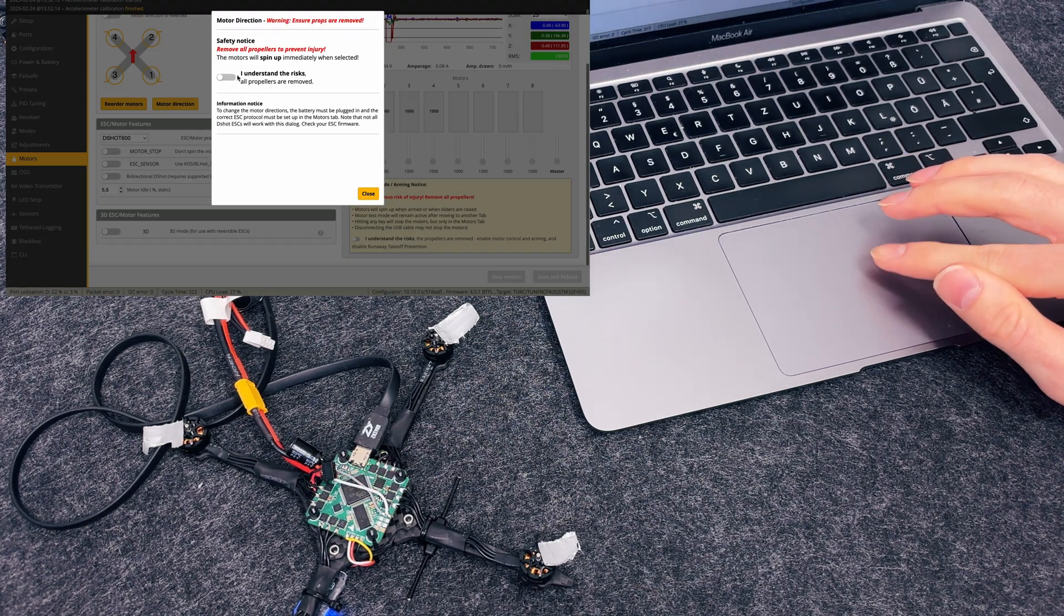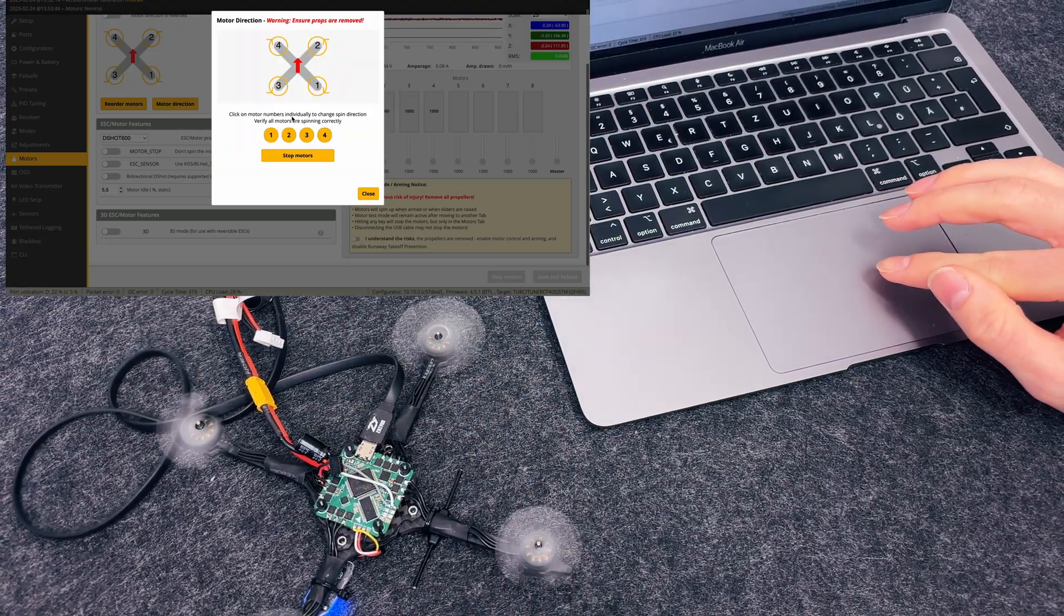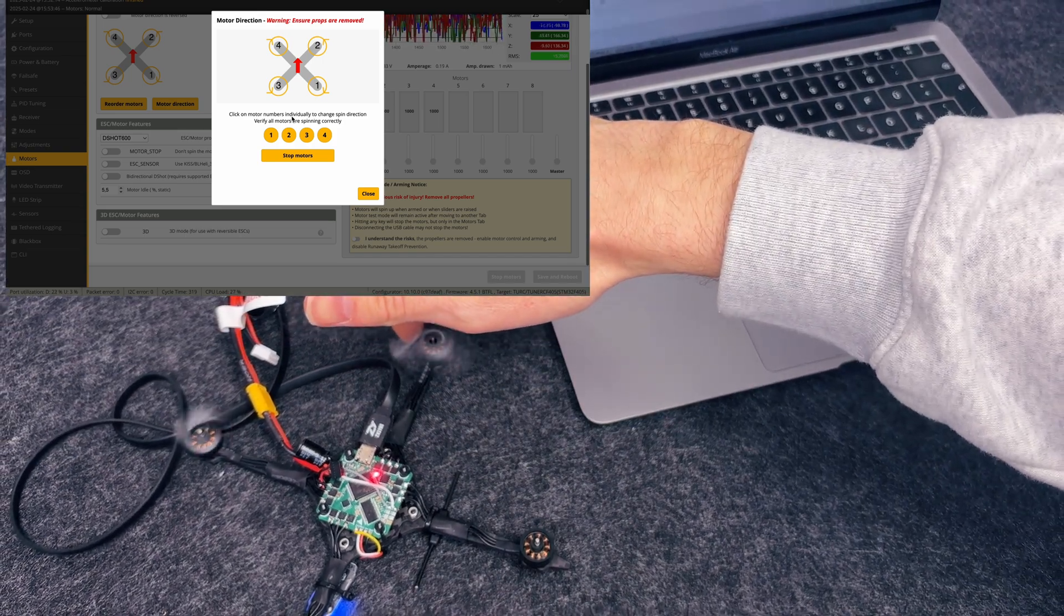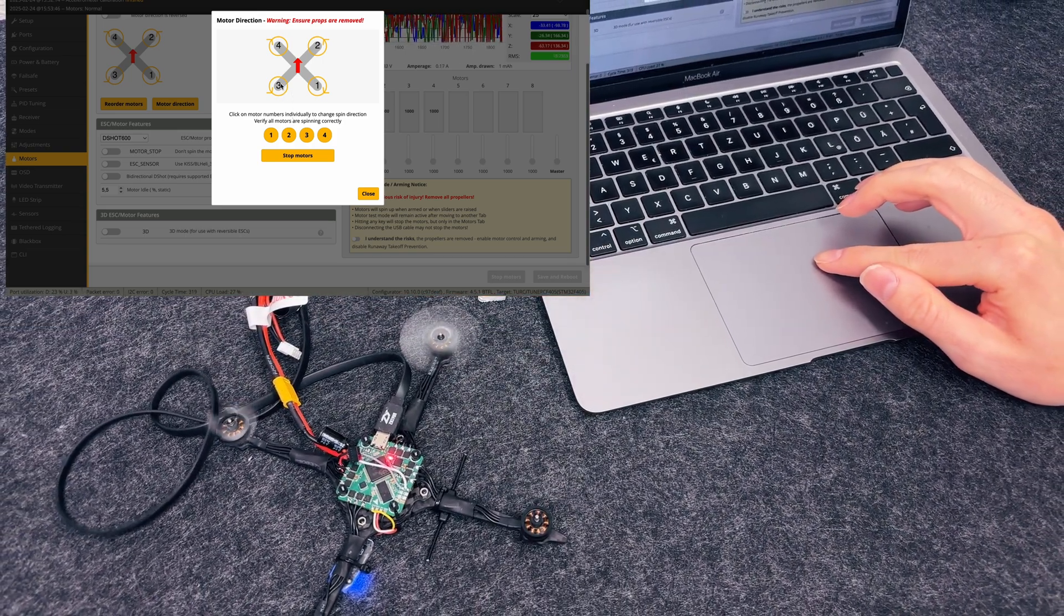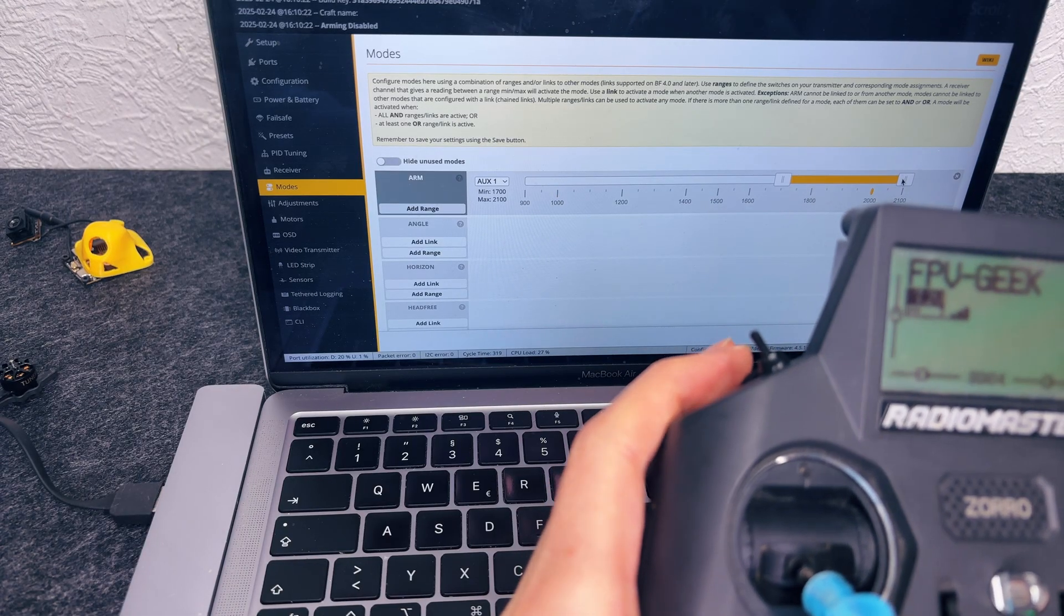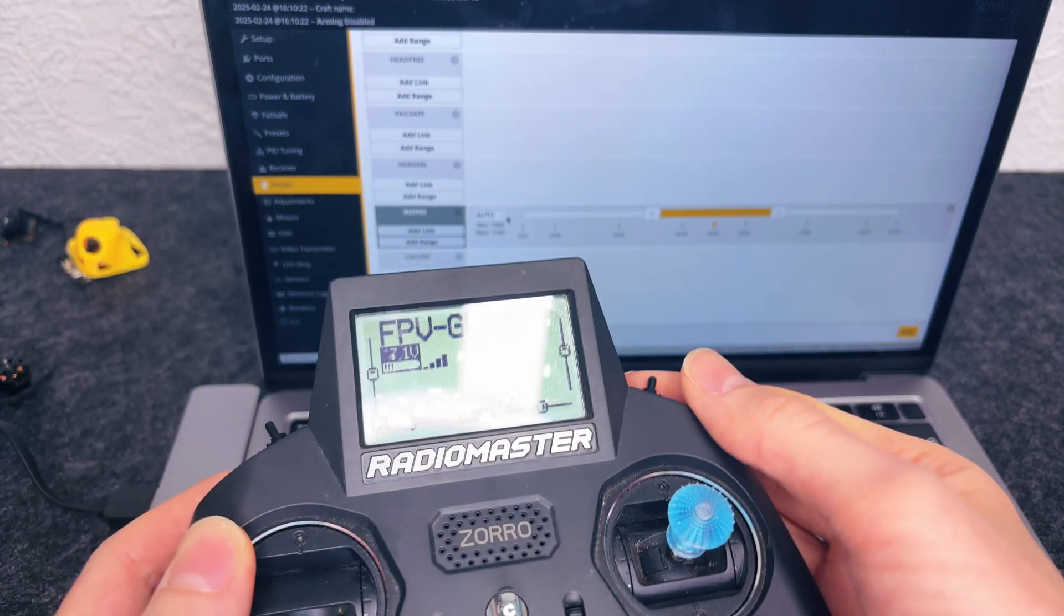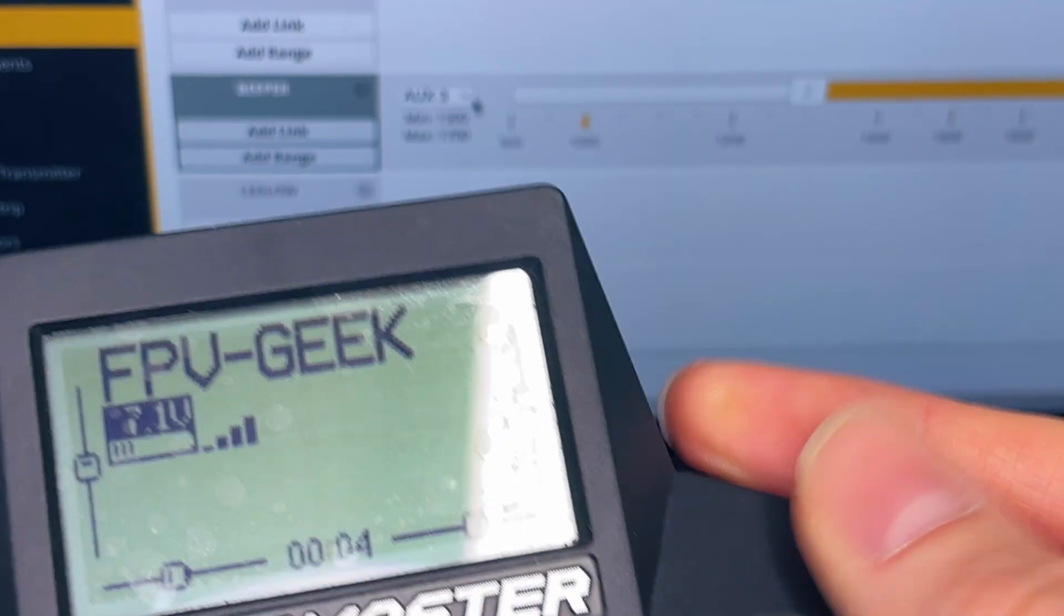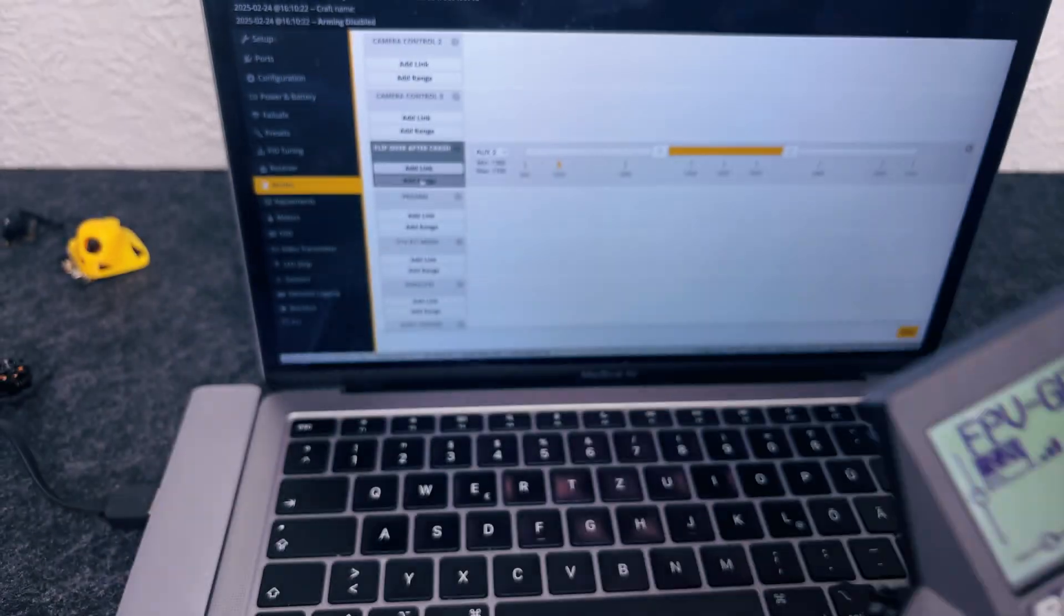And now, the motors. Do they spin the right way? Probably not. I use a small piece of tape on the bell to make the rotation super obvious. If they're spinning the wrong way compared to the direction shown in Betaflight's motor diagram, just hop into the motor wizard and reverse them. Before we can even think about flying, we need to set up some switches on the radio. The three I always map first. Arming. Because, well, you kinda need that to fly. Beeper. To find the quad. And Crash Flip. To flip it around.